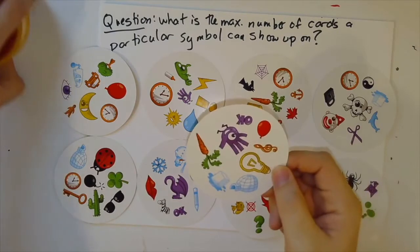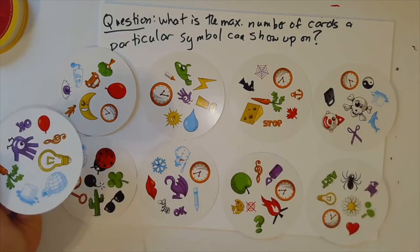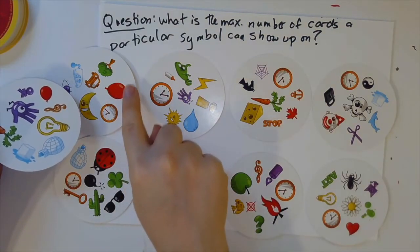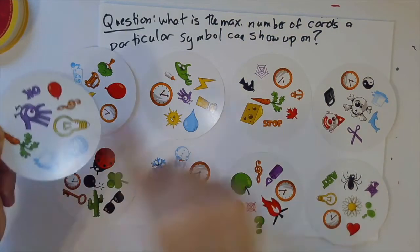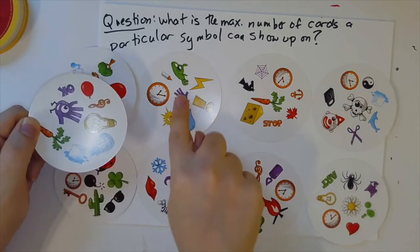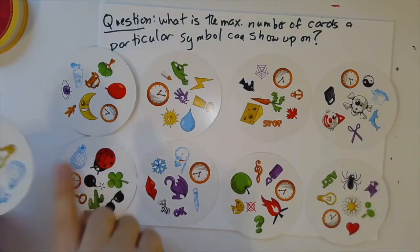So I want to think about what happens when I look at this card compared to each of these. Namely, this card has a symbol in common with this one, namely the balloon. It has a symbol in common with this one, namely the hand, and then the carrot, and then the ice cube, and then the igloo.